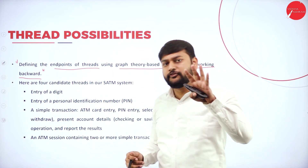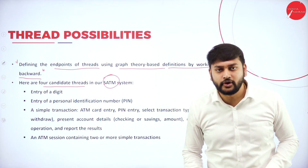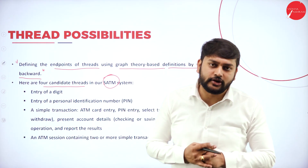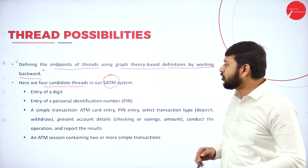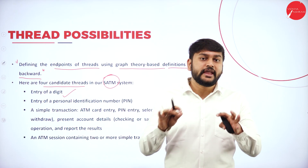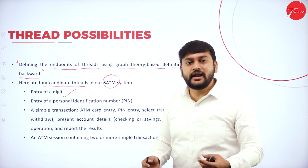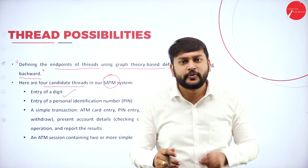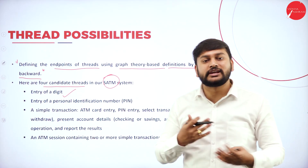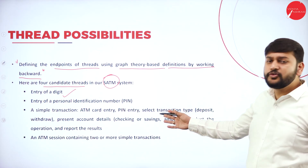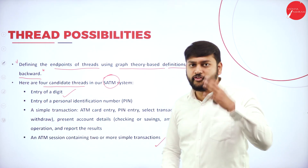The first candidate: entry of a digit. Whenever you go to the ATM, you will enter a digit. The second candidate: you will enter the PIN code — personal identification number. The third candidate: you will be performing some simple transactions. The fourth candidate: an ATM session containing two or more simple transactions.